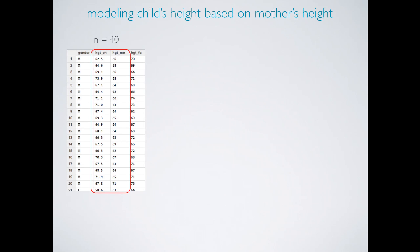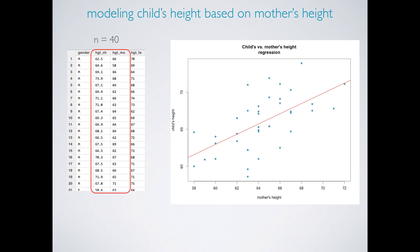We have data from four pairs of mothers and children. We actually have additional information on the children and the father's height as well, but for this particular example, we're just focusing on the child's height and the mother's height. When we plot these data against each other, we see that there is indeed a linear relationship between the two, so a simple linear regression model makes sense.